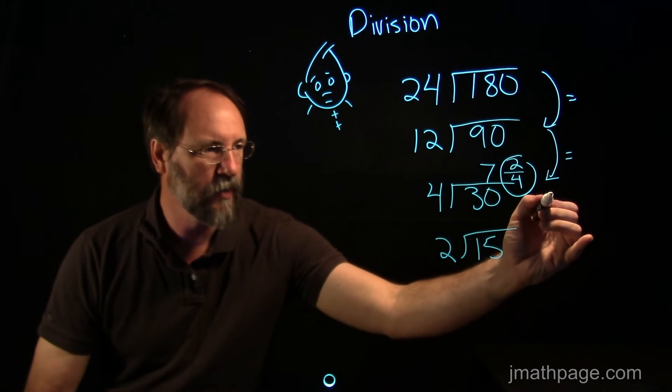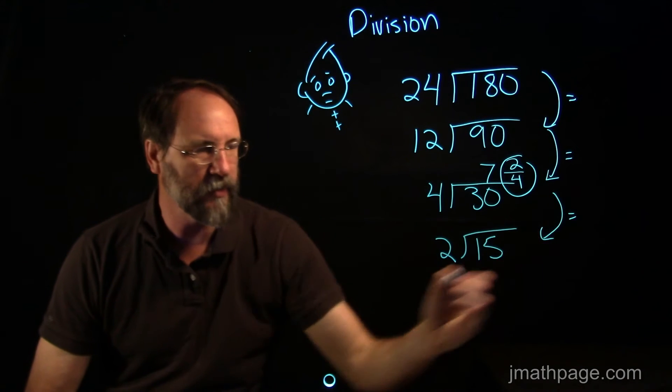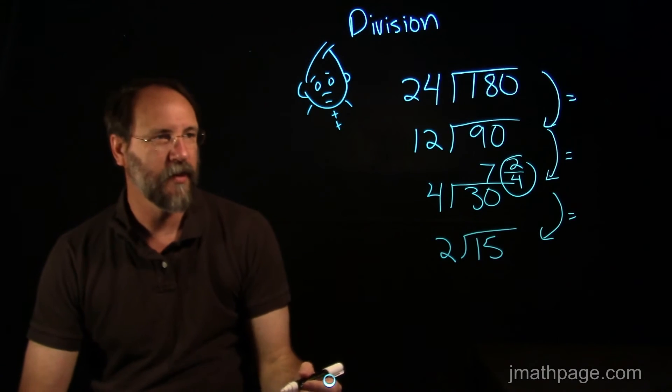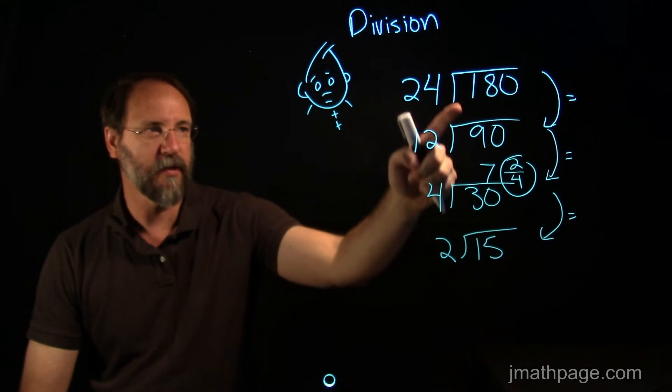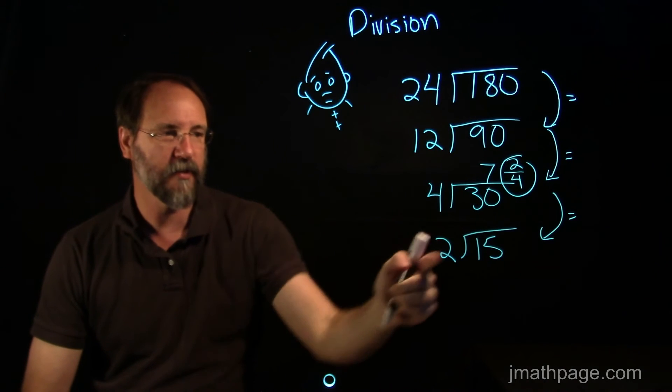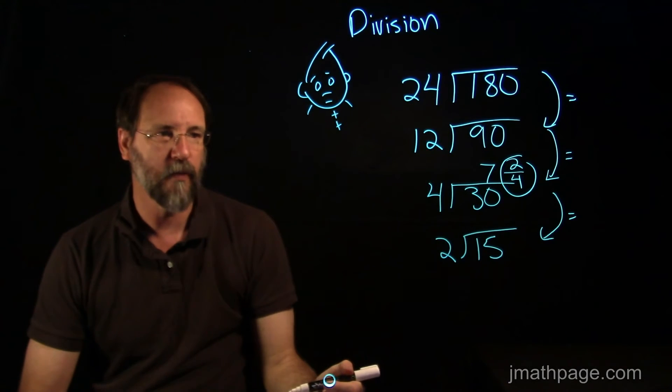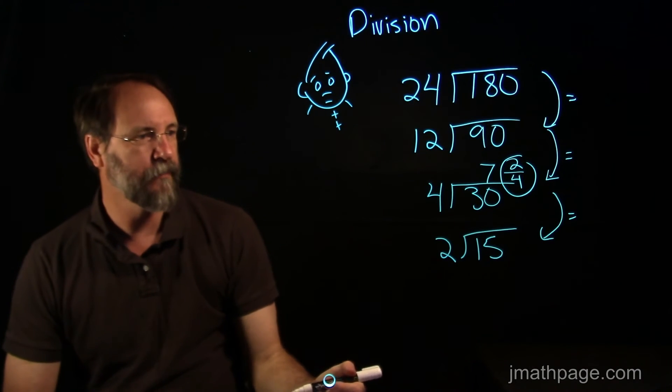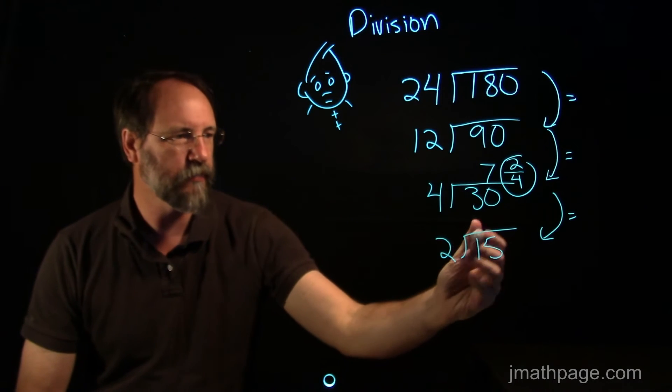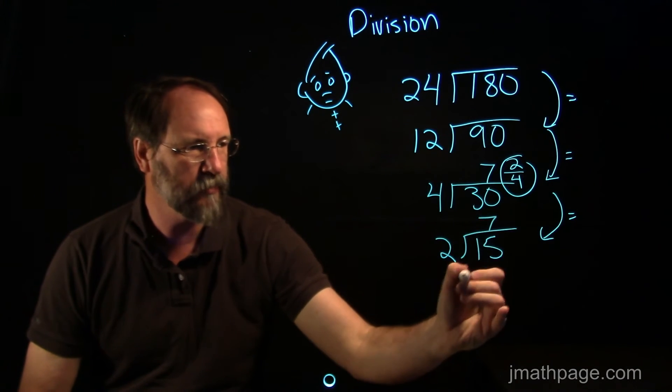15 divided by 2. And again, I'm assuming that these are going to be equal. Now, this problem looks like a much nicer problem than this problem. And I'm still assuming that they're the same problem. We're going to have to check to find out in a moment. So I know that 2 goes into 15 seven times.